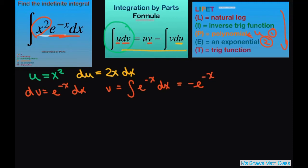So now we can use our formula. And we're going to get u times v is going to be negative x squared e to the negative x power. And then minus your integral. And we're going to write v du. And that's going to be negative 2x e to the negative x dx.